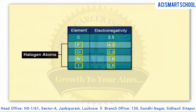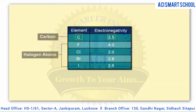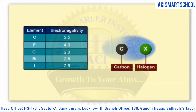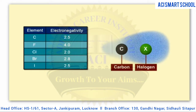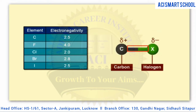It is important to note that halogens are more electronegative than carbon. This means that halogen atoms have a greater tendency than carbon atoms to attract electron density to themselves. As a result, bonds between carbon and halogen atoms are polar in nature. In the carbon-halogen bond, the carbon atom has a partial positive charge, while the halogen atom has a partial negative charge.